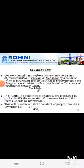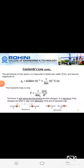In vector form, if point charges q1 and q2 are located at positions r1 and r2, the force exerted by q1 on q2 along the direction â₁₂ is written as F₂ = q1·q2 / (4πε₀·r₁₂²) · â₁₂. This is the vector form of Coulomb's Law.